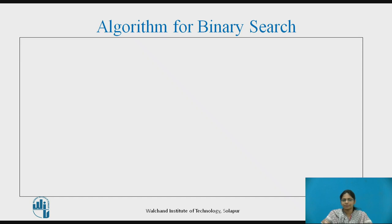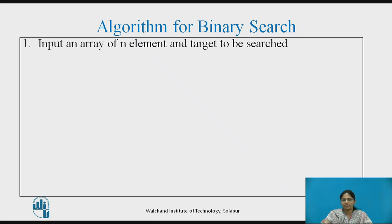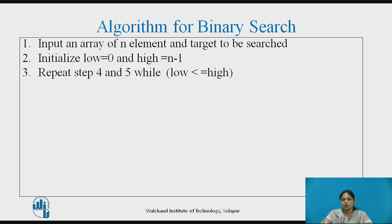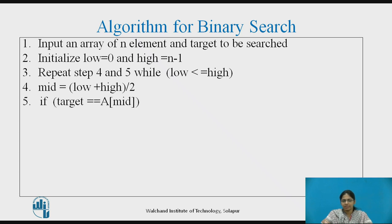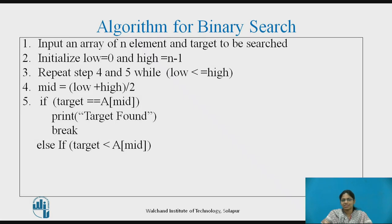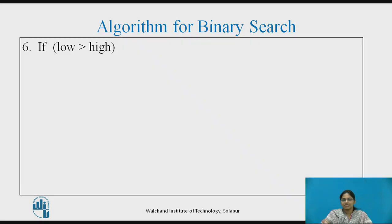Let us see the algorithm for binary search. First, input an array of n elements and the target to be searched. Then initialize low to 0 and high to n minus 1. Repeat the following steps while low is less than or equal to high: compute mid as low plus high divided by 2, then compare the target with A[mid]. If equal, print that the target is found and break the loop. Else if the target is less than A[mid], adjust high to mid minus 1. Else, the target is greater than A[mid], so set low to mid plus 1. After the loop, if low is greater than high, the target is not found.